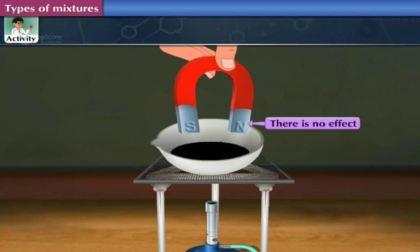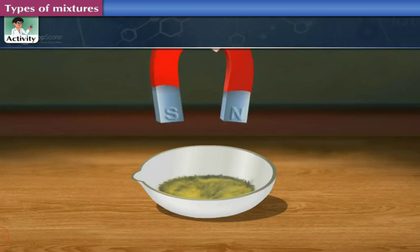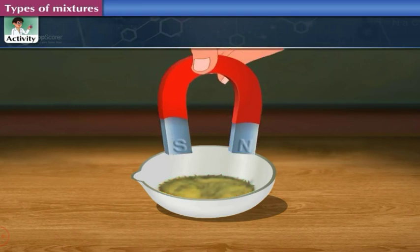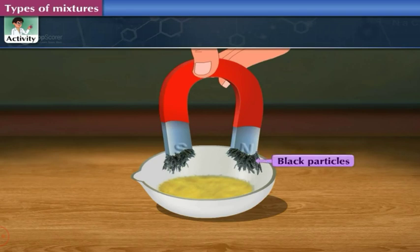Let us draw conclusions from this activity. We saw that when the magnet was brought near the matter obtained by mixing iron filings and sulfur powder, the iron filings cling to the magnet. The black particles seen were the particles of iron, and the yellow particles seen were the particles of sulfur.